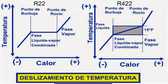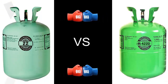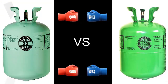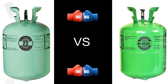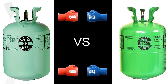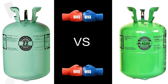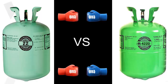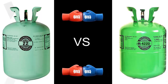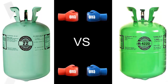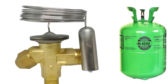In terms of cooling capacity, the R422 family tends to be slightly lower than that of R22, usually with less than a 5% difference. In some cases, using gases from the R422 family may require adjusting or regulating the expansion valve.